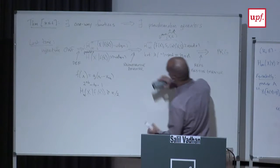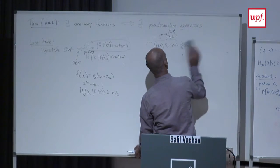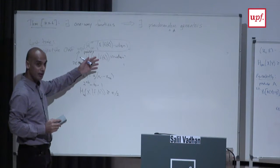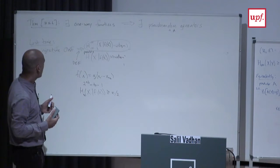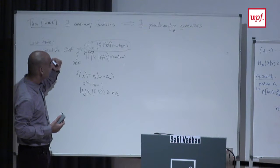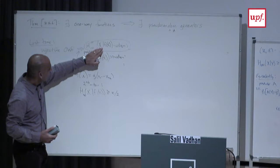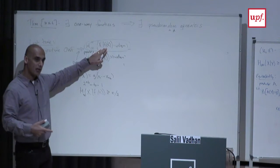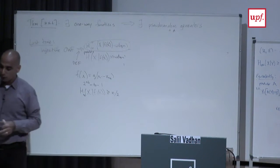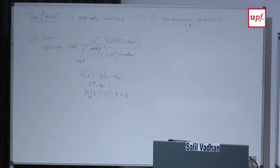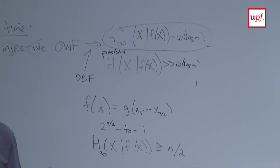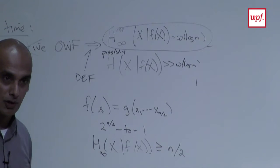What are we going to do? We're going to try to find some other pseudo-entropy notion that better captures the hardness of inverting f. In particular, looking at just the unpredictability entropy of x given f(x) is only talking about finding that specific pre-image that was used to compute f(x), whereas the definition of a one-way function says it should be hard to find any pre-image. We want to find some measure of pseudo-entropy that captures the idea that it's hard to find any pre-image.